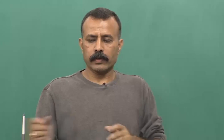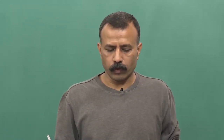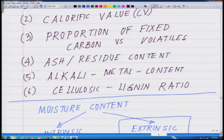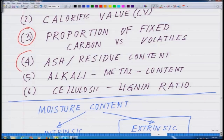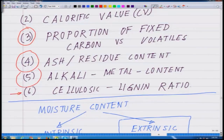Those are the first two concepts. Next we will go on to the other four concepts: the proportion of fixed carbon versus the volatile, followed by the ash residue content, the alkali metal content, and we have already discussed part of the silica-lignin ratio. Let us stop here — thank you.